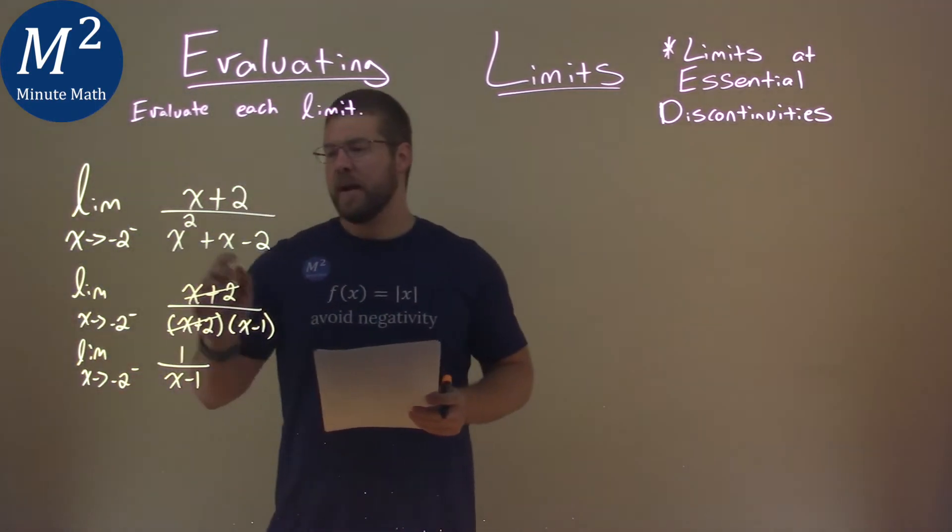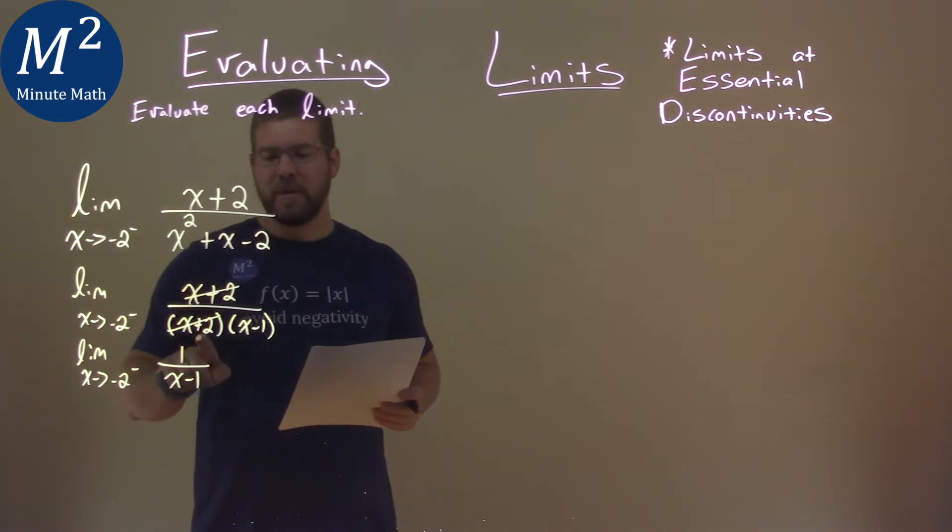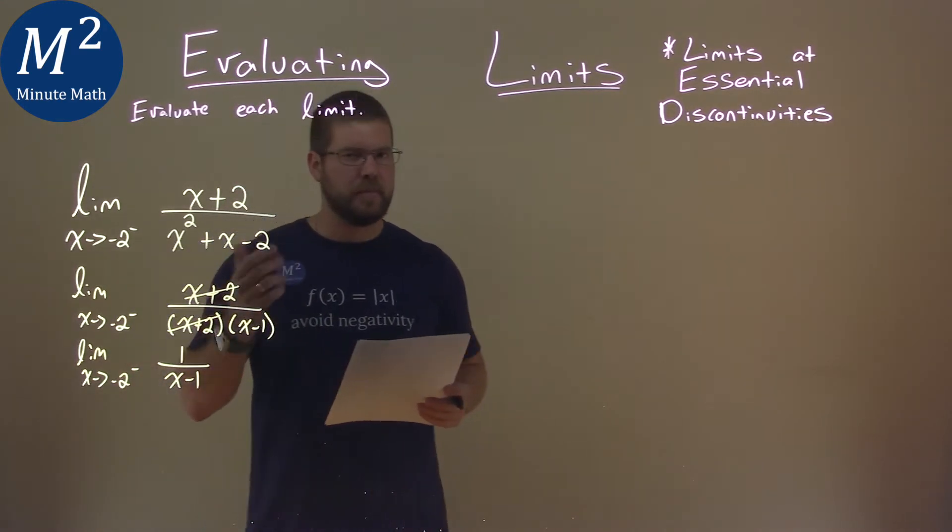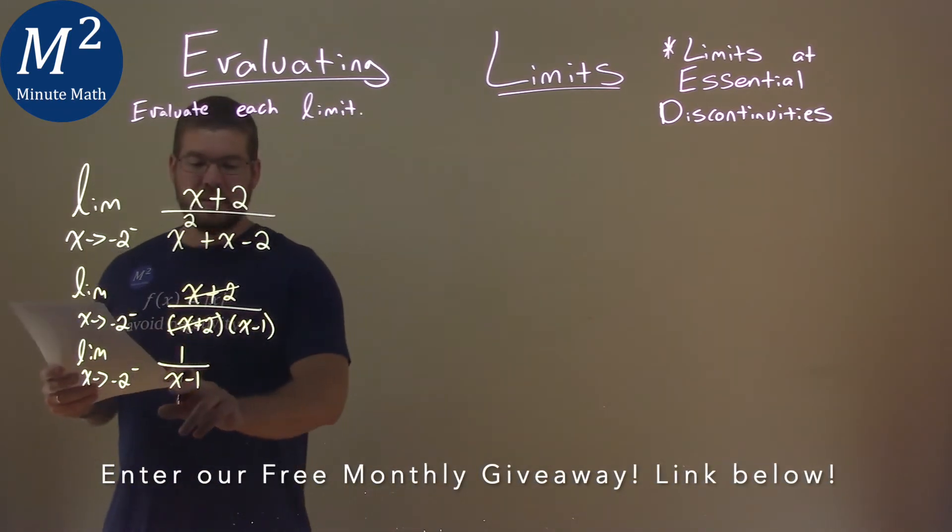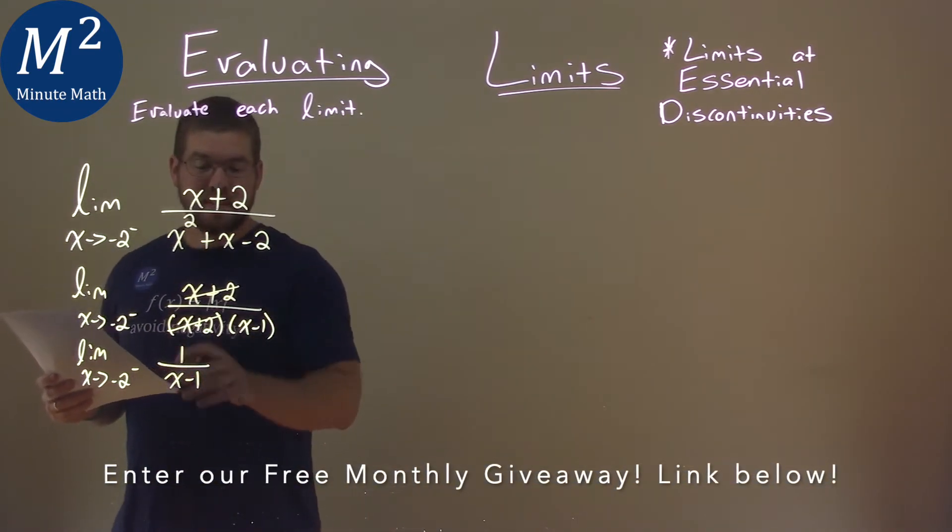Now we know it doesn't exist right at negative 2, right? From here we can see you plug that in, we're divided by 0, can't do that. But with this simplification here, it kind of makes it a little easier for us, we can directly plug it in.